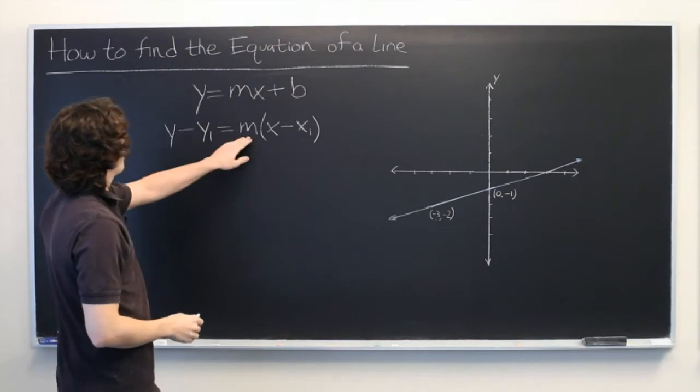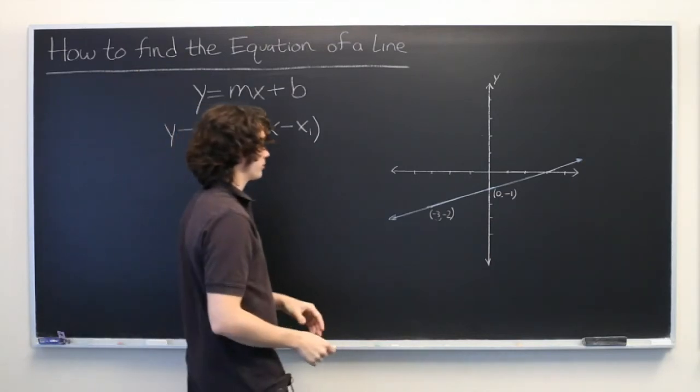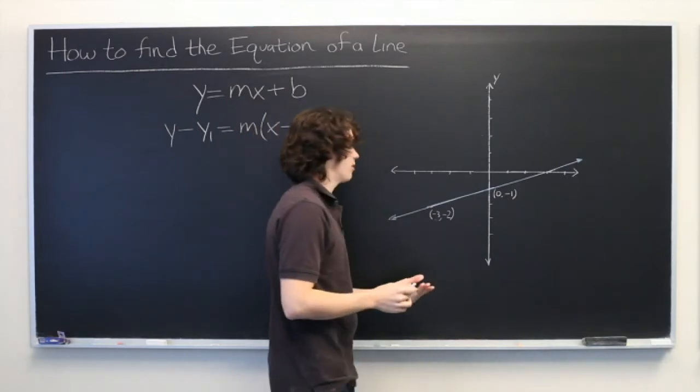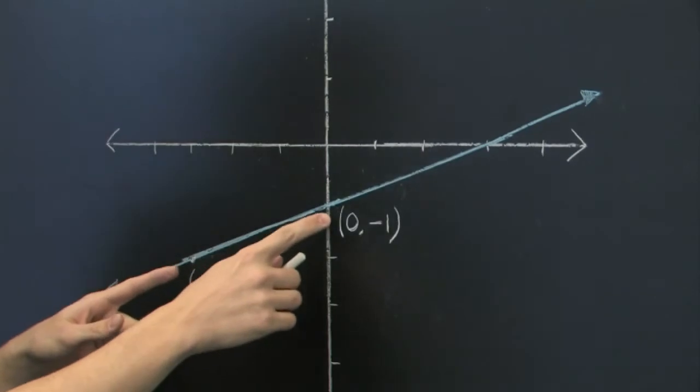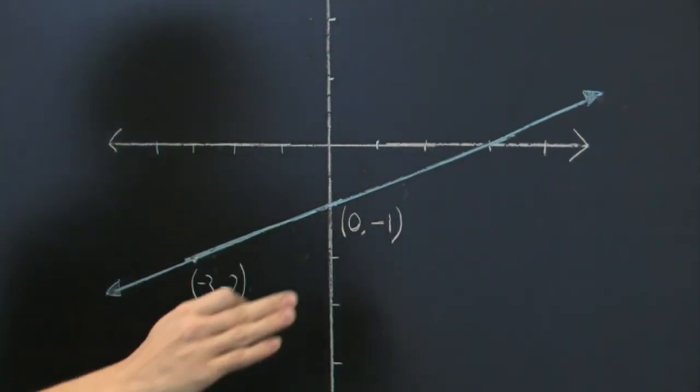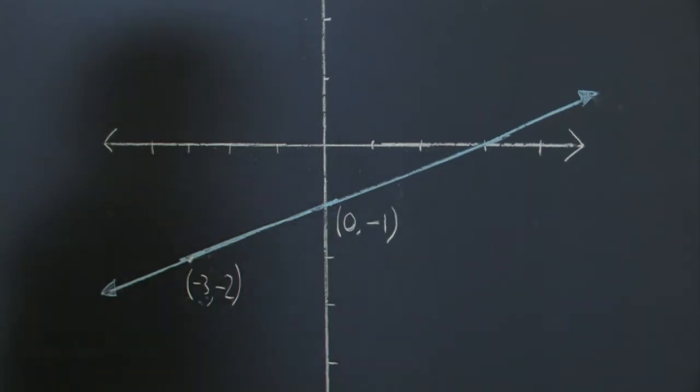As you can see, both of these equations require the slope, so let's figure that out before we move any further. One way of thinking about the slope is rise over run. We can pick any two points on the line that we know. In this case, we have (0, -1) and (-3, -2) and figure out the rise over run between those two points.